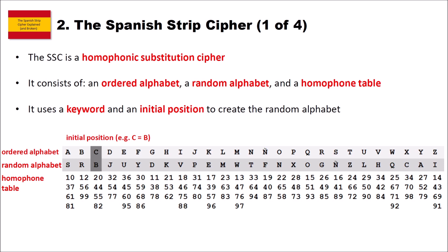Now let's speak about the Spanish Strip Cipher in detail. As I already said, it is a homophonic substitution cipher. The Spanish Strip Cipher consists of an ordered alphabet, a random alphabet, and a homophone table. It uses a keyword and an initial position to create the random alphabet. We have the initial position, for instance c equals b, and on top of the paper we have the ordered alphabet, below that the random alphabet, and then the homophone table.